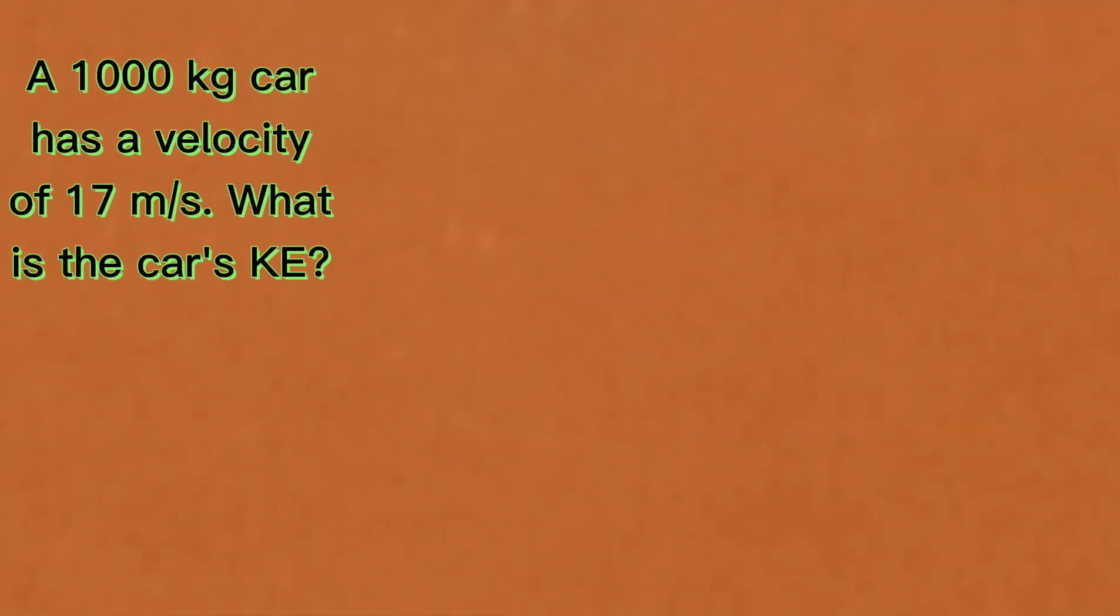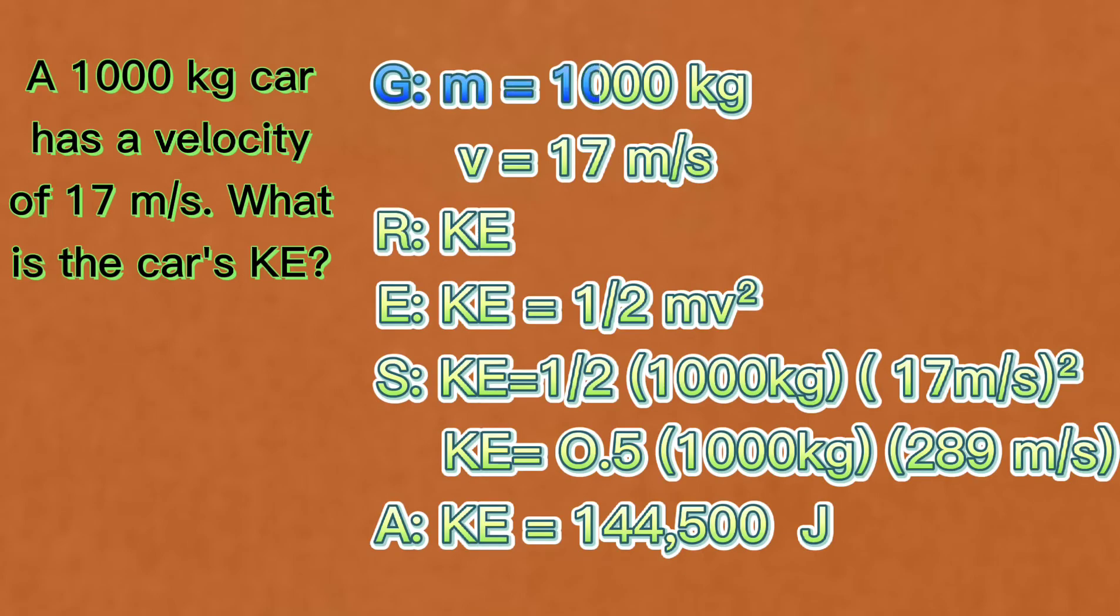Let's try solving this. A 1000 kilograms car has a velocity of 17 meters per second. What is the car's kinetic energy? Let's apply the GRESA. G stands for given, R for required, E for equation, S for solution, and A for the answer.